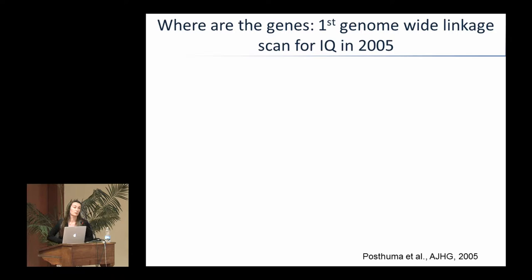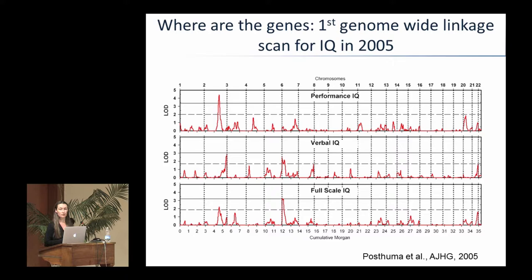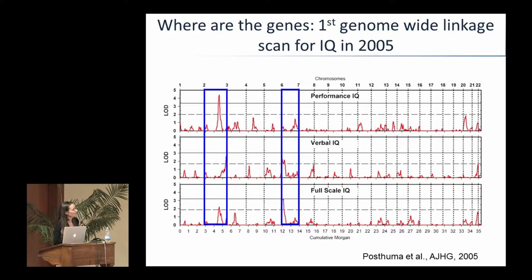Once you know a trait is heritable, you want to know what the genes are. A decade ago, we couldn't do this in a very nice manner — it was costly to search for genes. The only feasible method we had was linkage analysis, where you compare genetic similarities between members of the same family and link that similarity in genes to similarity in a trait. It gives you a region on a chromosome likely to harbor important genes, but not the actual genes. We conducted the first genome-wide linkage scan for IQ in 2005.